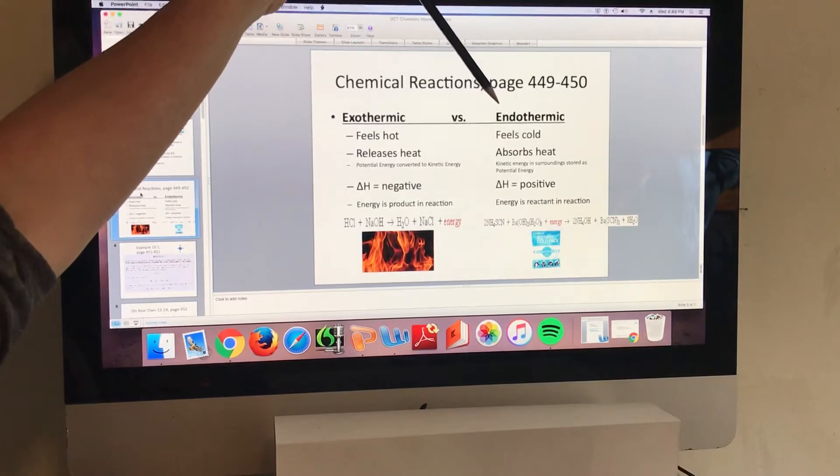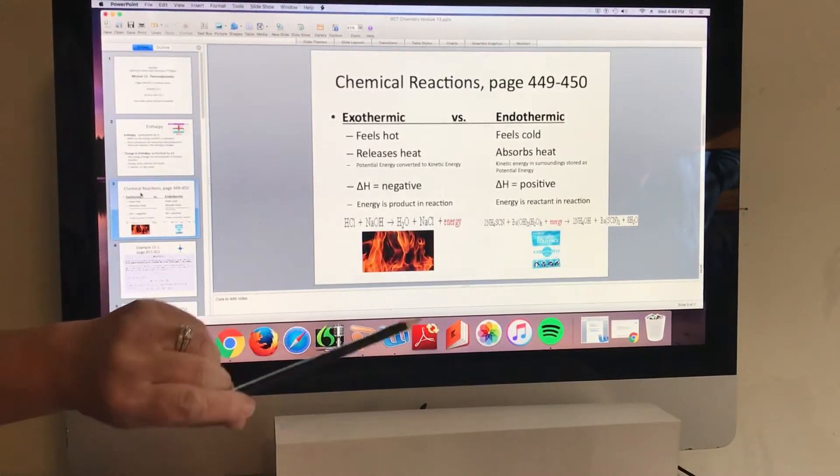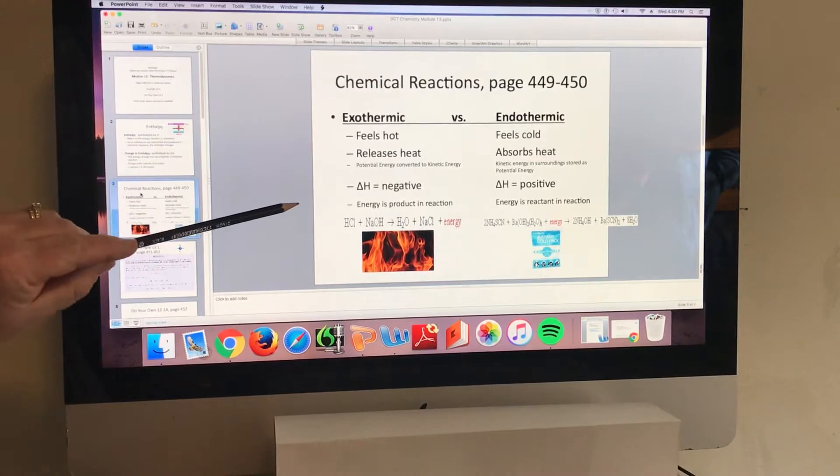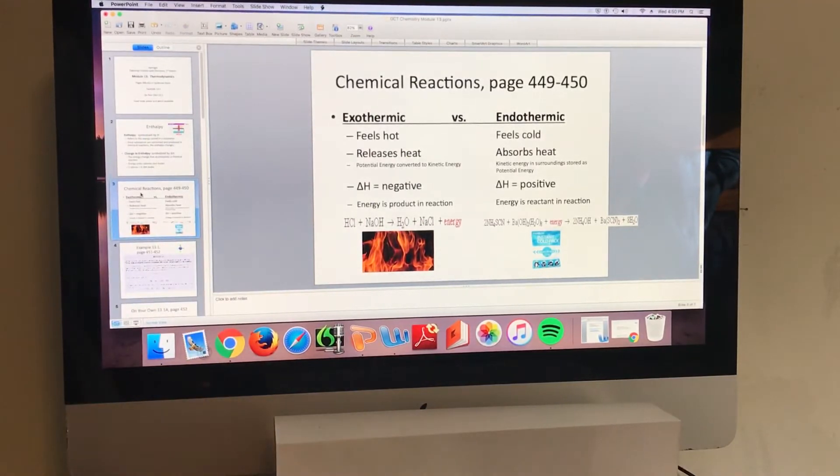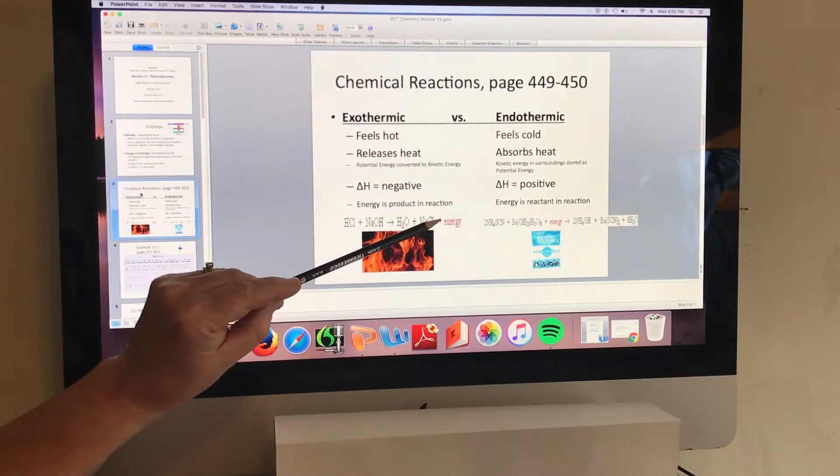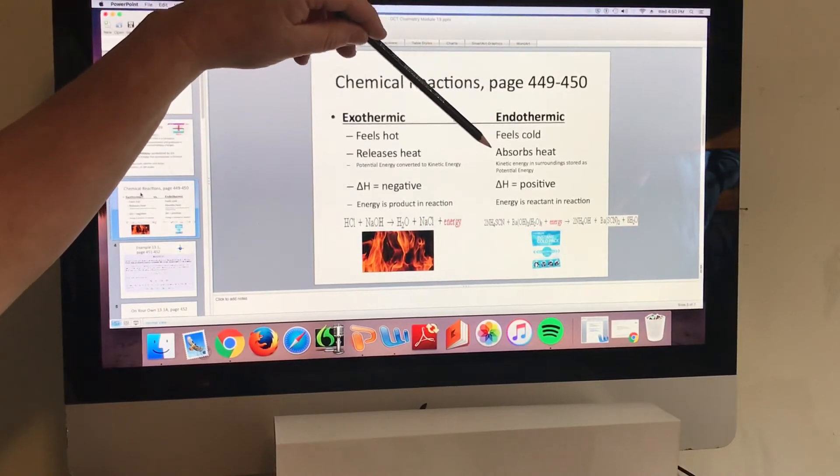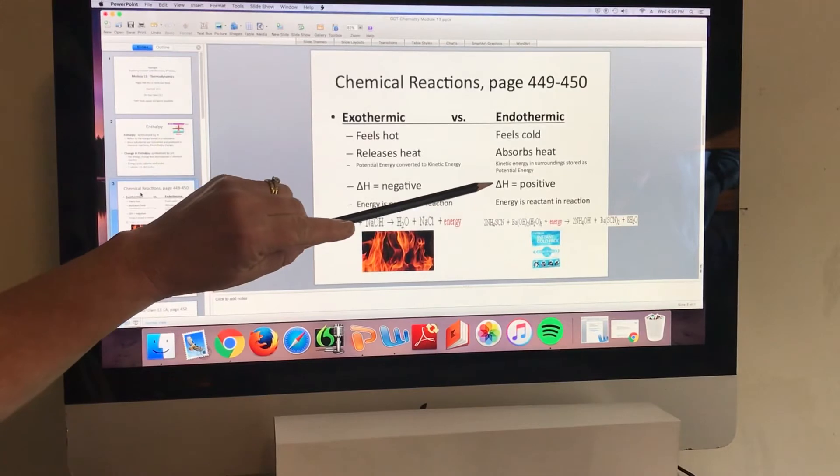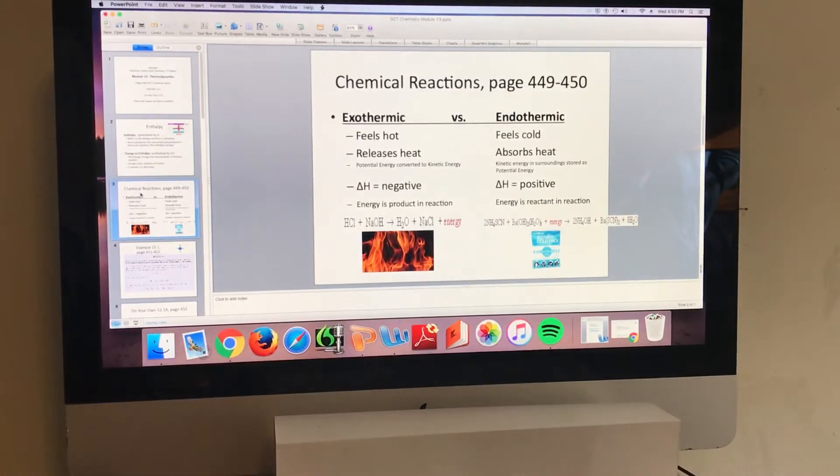So I've summarized some information on pages 449 to 450 on this one particular slide. We're comparing and contrasting exothermic versus endothermic reactions. So an exothermic reaction would feel hot to the touch, like a fire burning. It releases heat. We know here that the potential energy is converted into kinetic energy. In this case the delta H is negative. And when you're writing the chemical reaction in the formula it's considered a product in the reaction. So you can see that red energy. We contrast that to endothermic which feels cold, absorbs heat. The kinetic energy in the surroundings is stored as potential energy. Here our delta H is positive and the energy in this case is considered a reactant on the left side of the arrow in the reaction. And an example of that would be one of our instant cold packs.